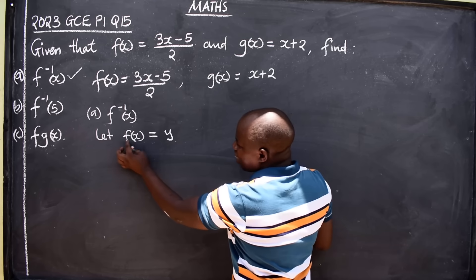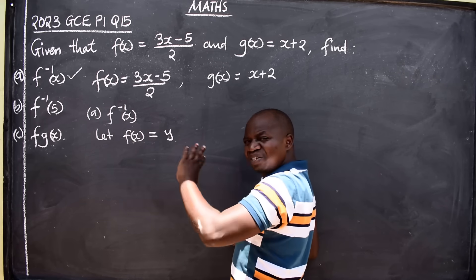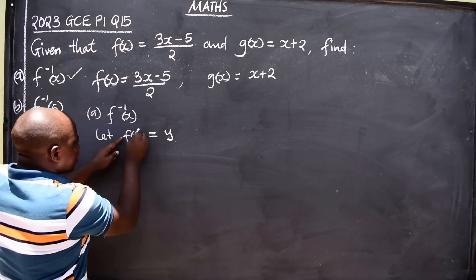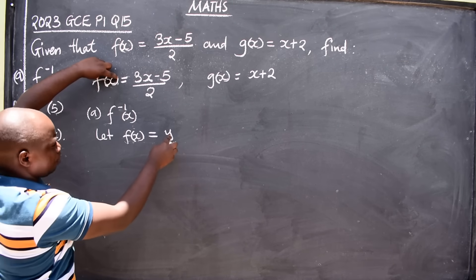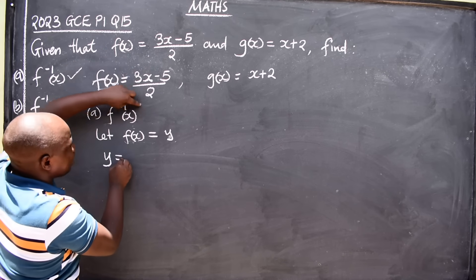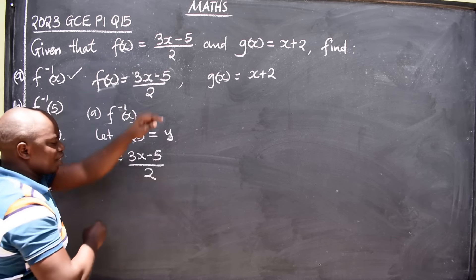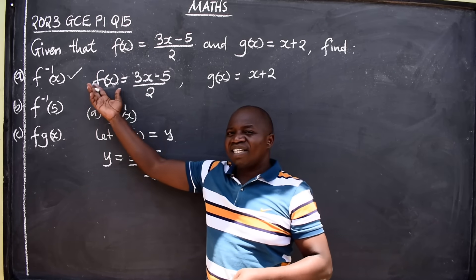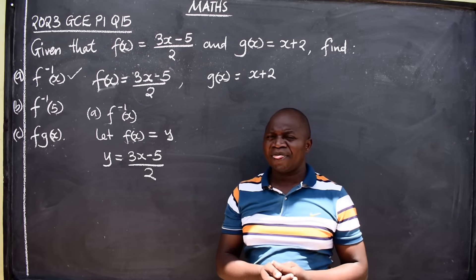Where we have f(x), we replace it with y. So we write: y = (3x - 5)/2. That is the first step. Now, we should let the function be equal to any variable. In the second step, we are going to make x the subject of the formula in this equation.